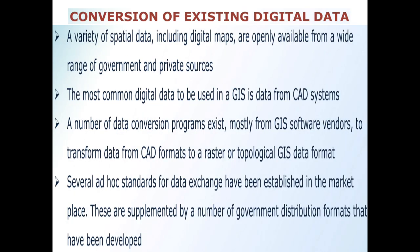Now we discuss the conversion of existing digital data. A variety of spatial data is available from a range of government and private resources. The most common digital data used in GIS is the data from CAD systems. A number of data conversion programs exist — mostly from GIS software vendors — to transform data from CAD formats into GIS data format. Several ad hoc standards for data exchange have been established in the marketplace, supplemented by government distribution formats. In our next lecture we will discuss the different data models used in GIS. Thank you.